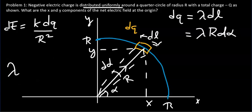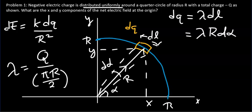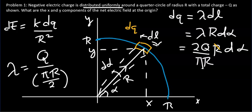The charge per unit length lambda equals the total charge Q divided by the entire length of the quarter circle, which is pi·r/2. Therefore the charge element dq = lambda·dl = (Q / (pi·r))·r·d_alpha. The r cancels, giving dq = 2Q·d_alpha / pi.